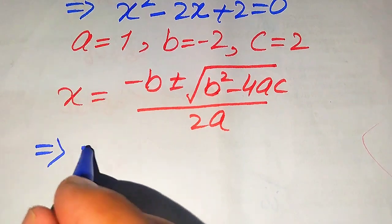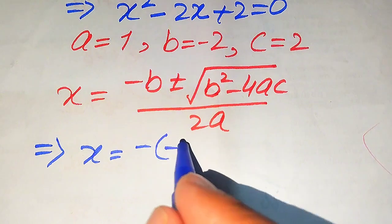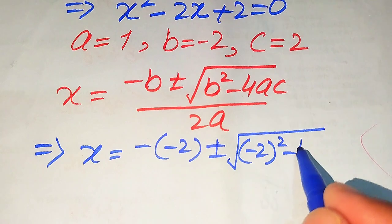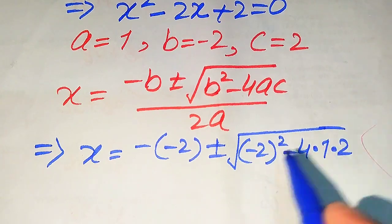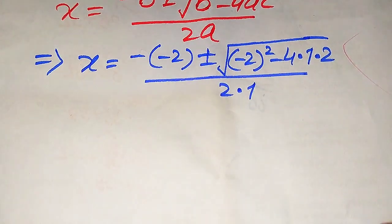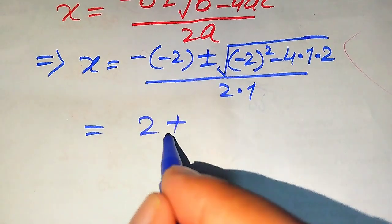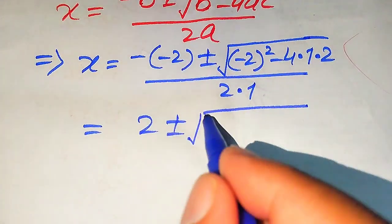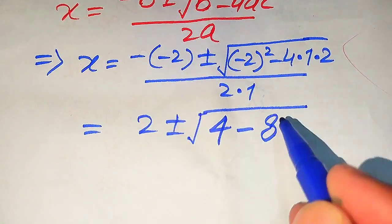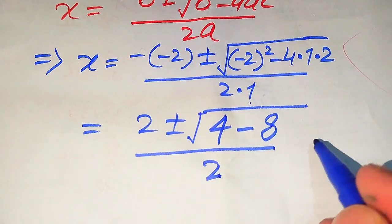Substituting these values into the quadratic formula, we get: minus times minus 2, plus or minus square root of minus 2 squared, minus 4 times 1 times 2, divided by 2 times 1. This simplifies to: plus 2, plus or minus square root of 4 minus 8, divided by 2.